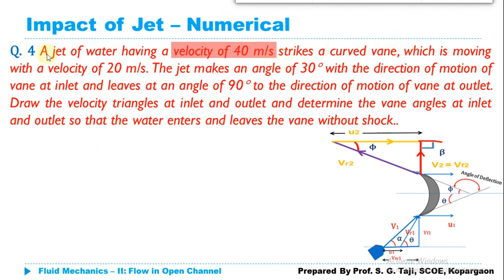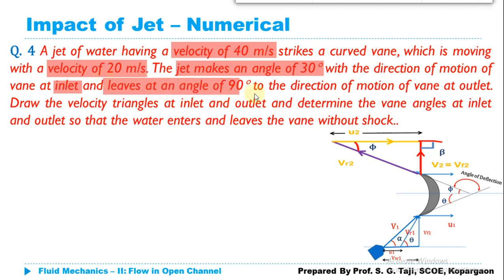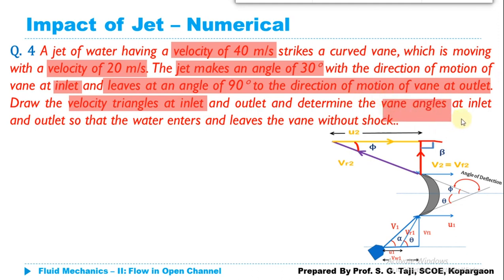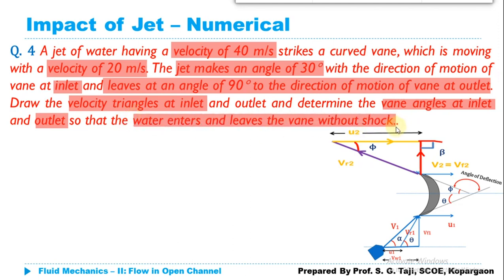A jet of water having velocity 40 m/s strikes a curved vane moving with velocity 20 m/s. The jet makes an angle of 30° with the direction of motion of the vane at inlet, and leaves at an angle of 90° to the direction of motion of the vane at outlet. Draw the velocity triangles at inlet and outlet and determine vane angles at inlet and outlet such that water enters and leaves without shock.